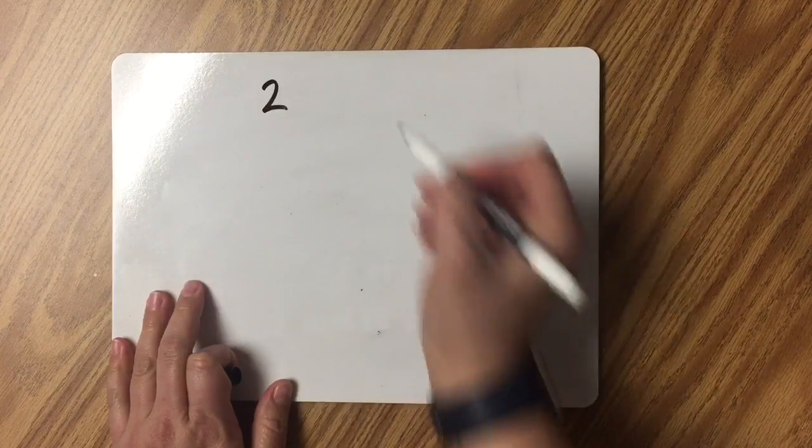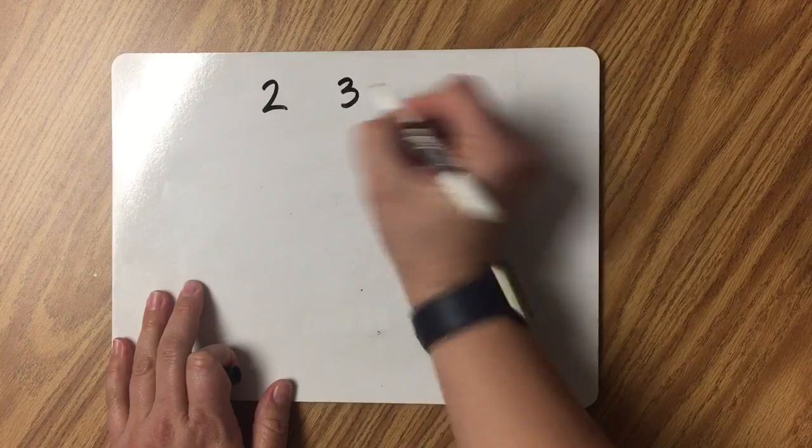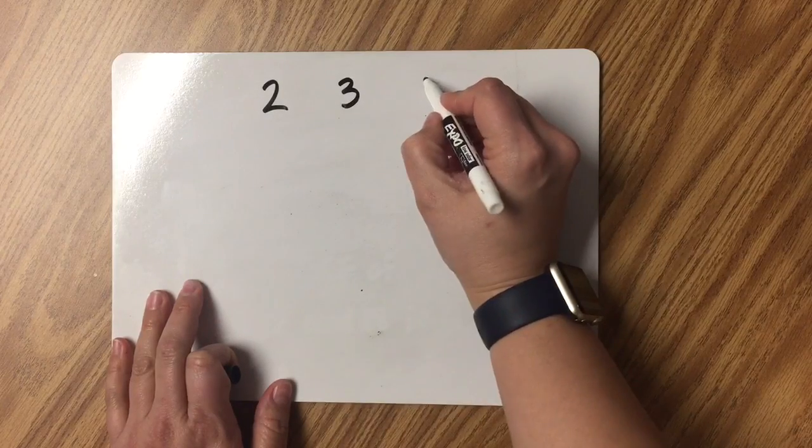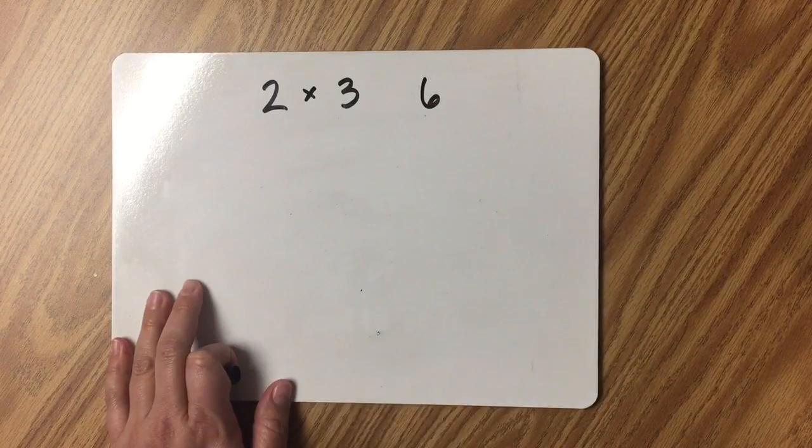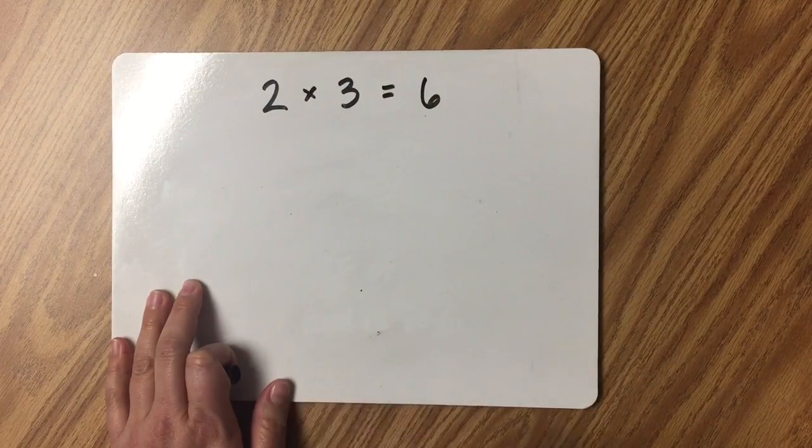As a review, I want to remind you that factors are numbers we can multiply together to get another number. For example, 2 and 3 are factors of 6. That's because 2 times 3 equals 6.